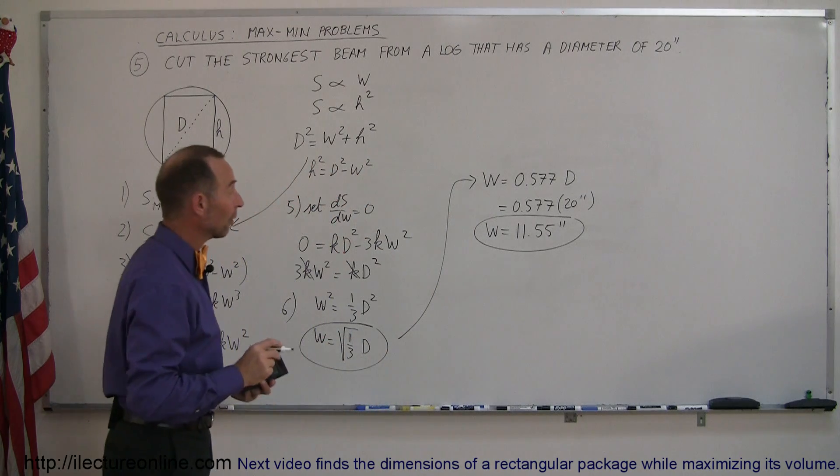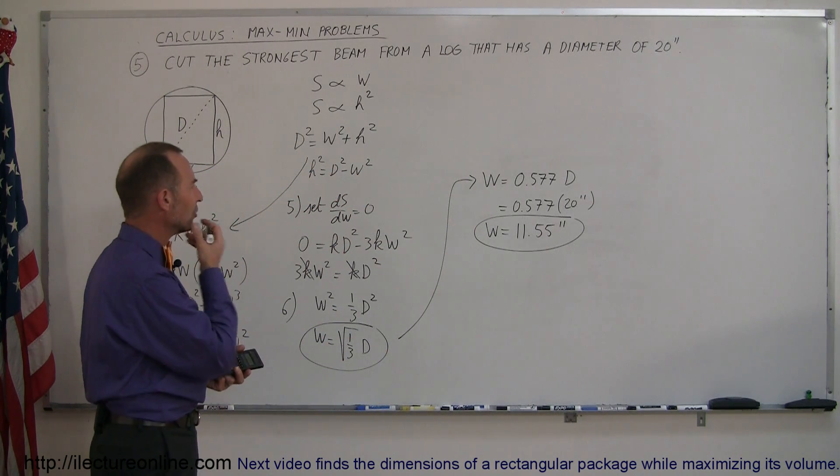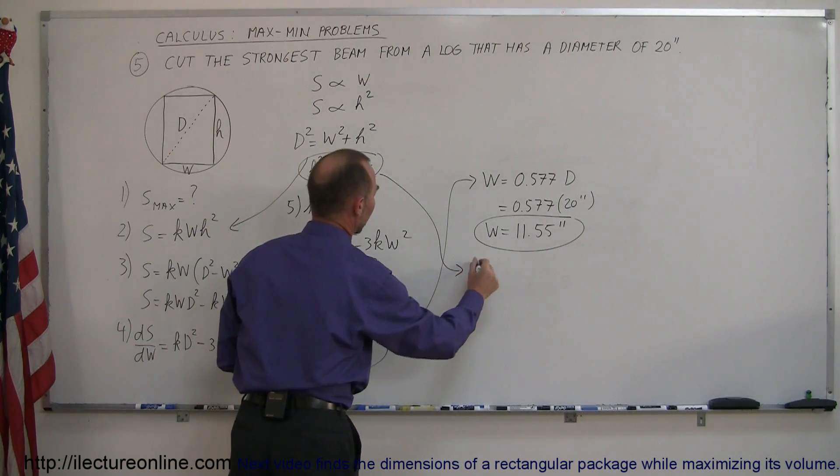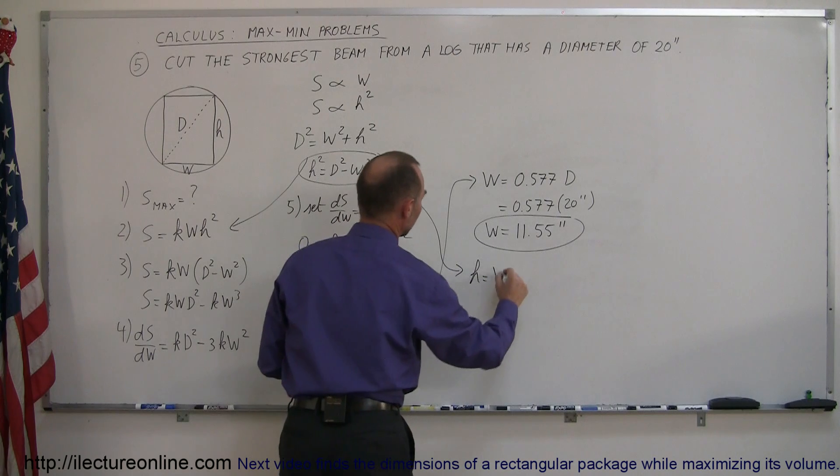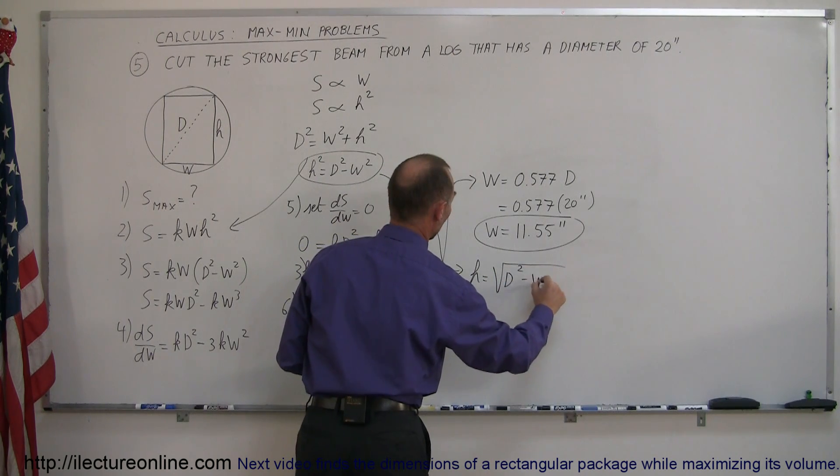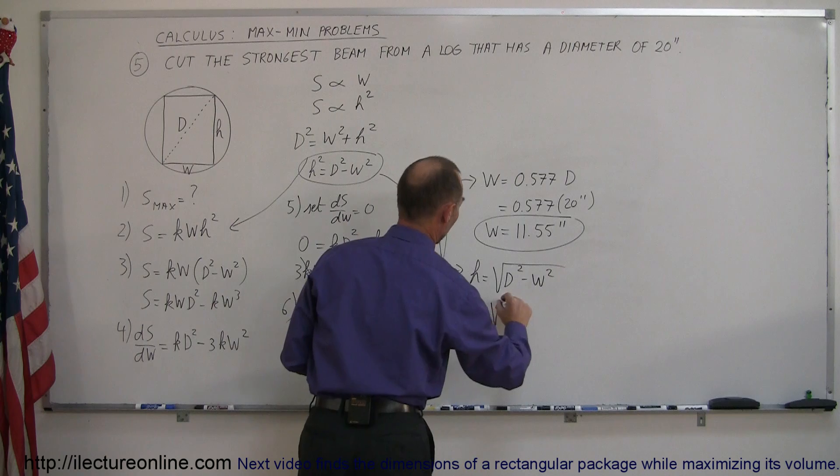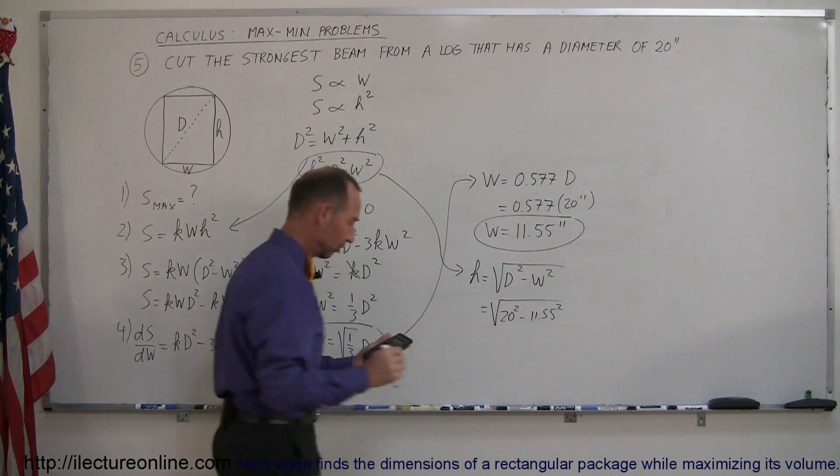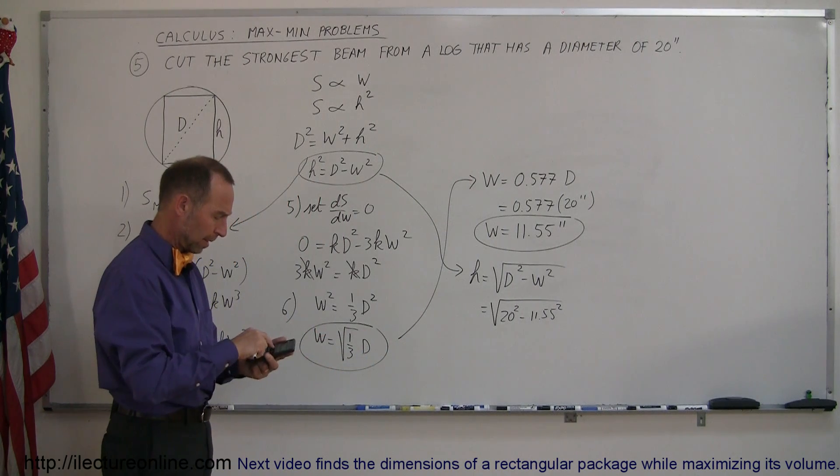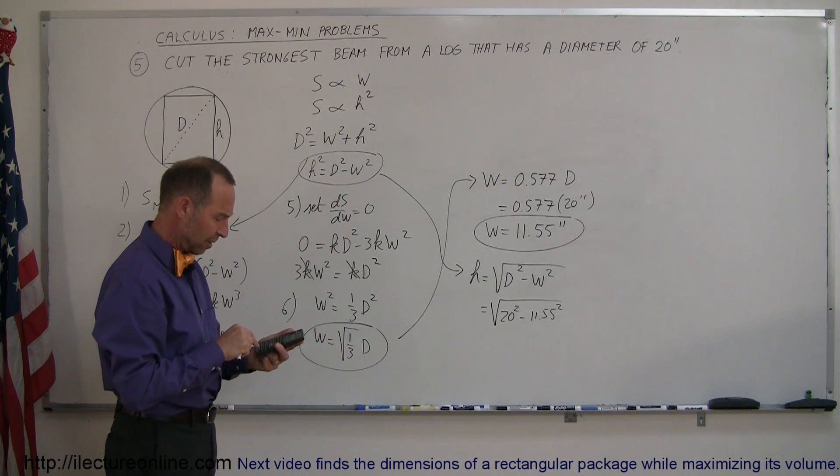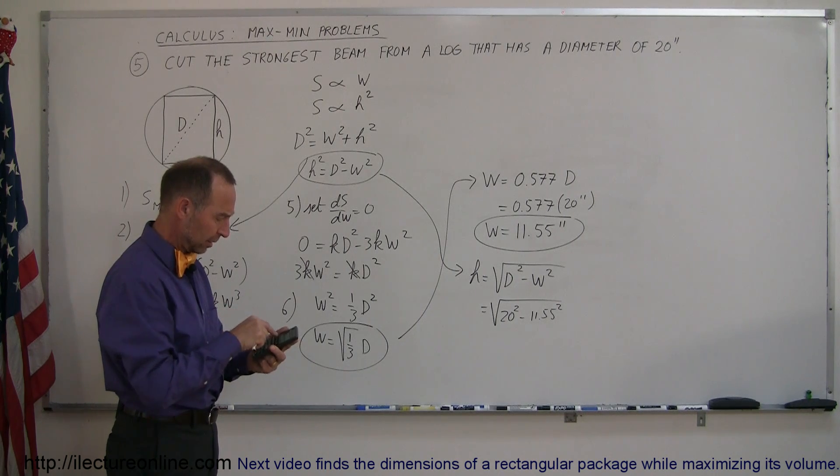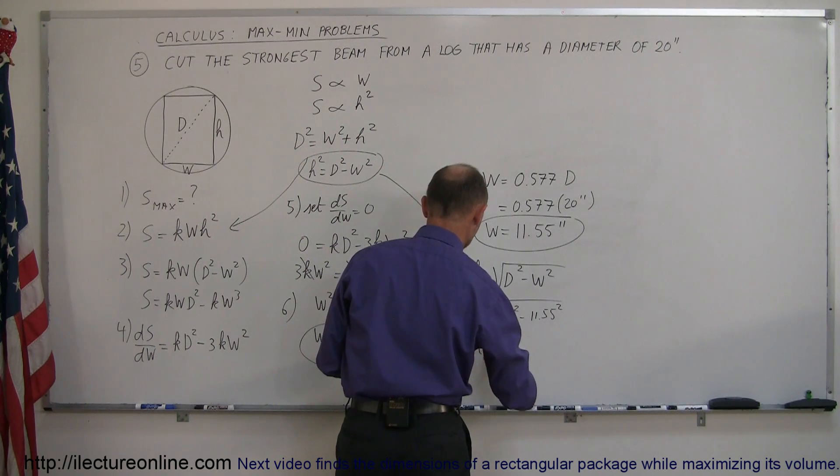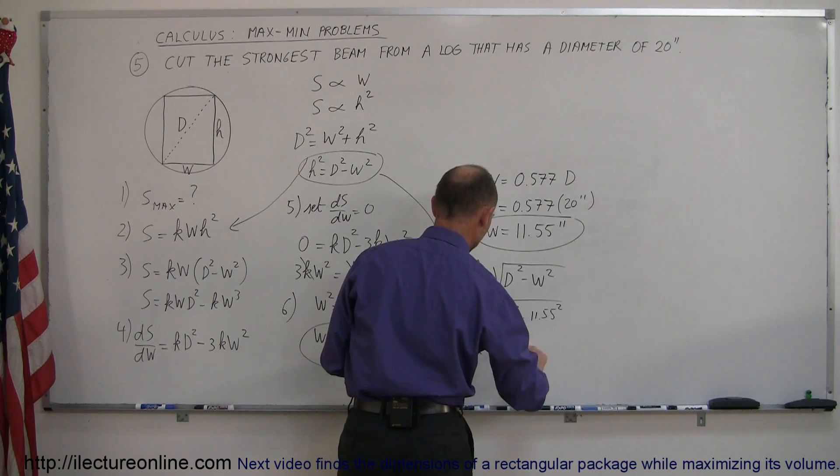All right, since now we have the value for w, what would be the value for h? And h can be found by using this equation right here. So the height is equal to the square root of the diameter squared minus the width squared. So this is equal to the square root of 20² minus 11.55². So let's do that: square this result and subtract that from 400, take the square root, and we have 16.33. So the height is equal to 16.33 inches.